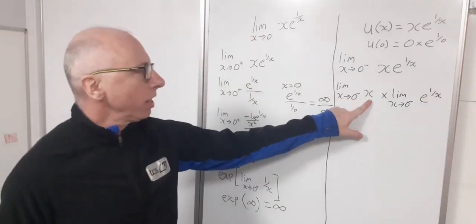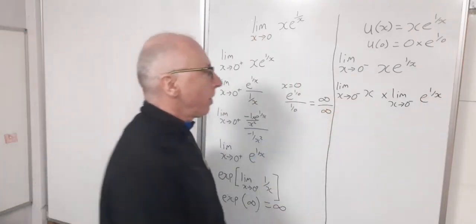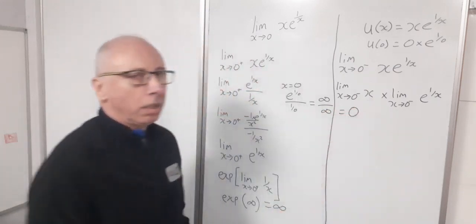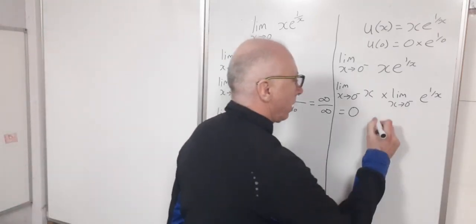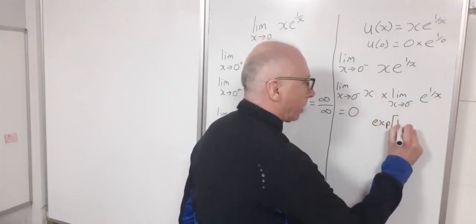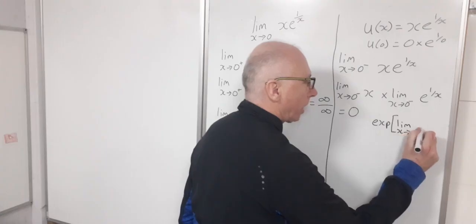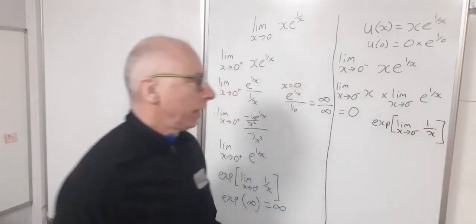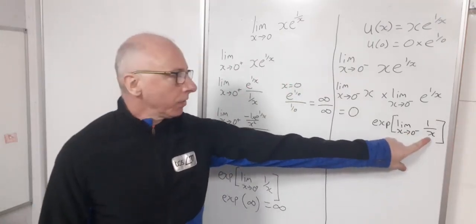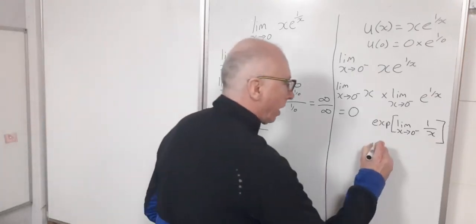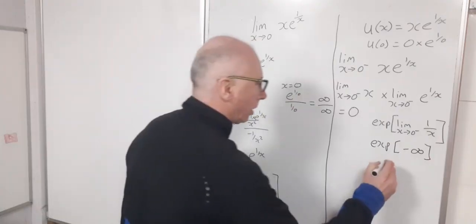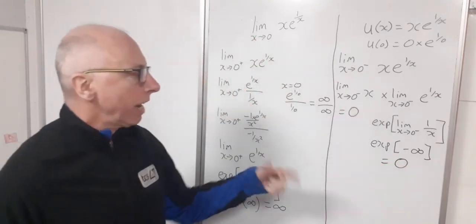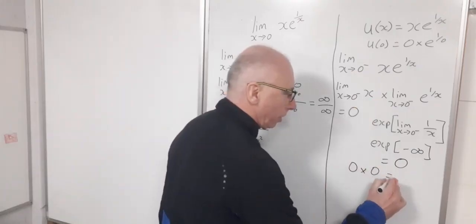As x approaches 0 from the negative side, x itself approaches 0 — so that factor is just 0. For the exponential part, I bring the exponential out: exp of the limit as x approaches 0 from the negative side of 1/x. Since x is a very small negative number, 1/x approaches negative infinity, so e^(negative infinity) equals 0. Combining the two limits gives 0 times 0, which is 0.